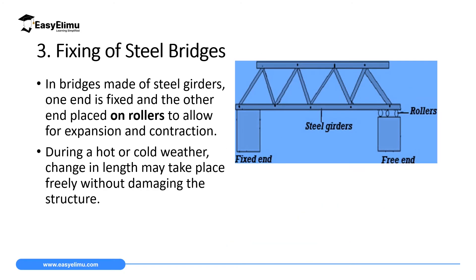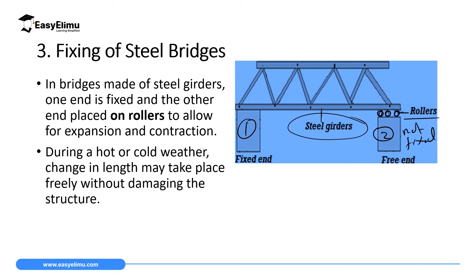The third application of contraction and expansion in solids is in the fixing of steel bridges. In bridges made of steel girders, one end of the bridge is fixed, and the other end is placed on rollers. The side placed on rollers is not fixed — we have the first roller, the second roller, and the third roller.